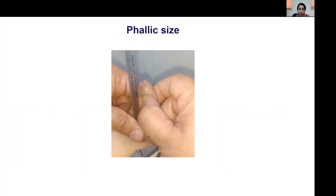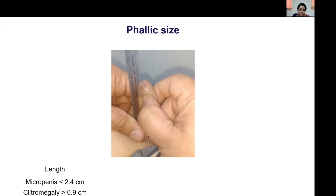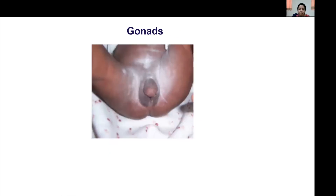It is important to determine phallic size accurately using a rigid transparent ruler on the dorsal aspect of the phallus, extending from the pubic symphysis to the tip excluding the foreskin. A length less than 2.4 cm in a phenotypic male comprises micropenis, and more than 0.9 cm in a female points towards clitoromegaly. Apart from phallic length, the mid-shaft diameter should be measured and erectile tissue palpated.